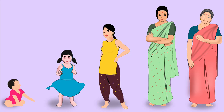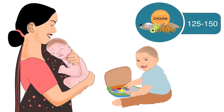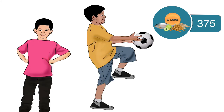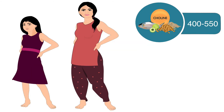Adequate intake of choline varies for different age groups. For 0 to 13 month old infants, it is 125 to 150 mg per day. For 1 to 8 years old children, it is 200 to 250 mg per day. Children aged 9 to 13 years require 375 mg per day, and 14 to 18 years old need 400 to 550 mg per day.